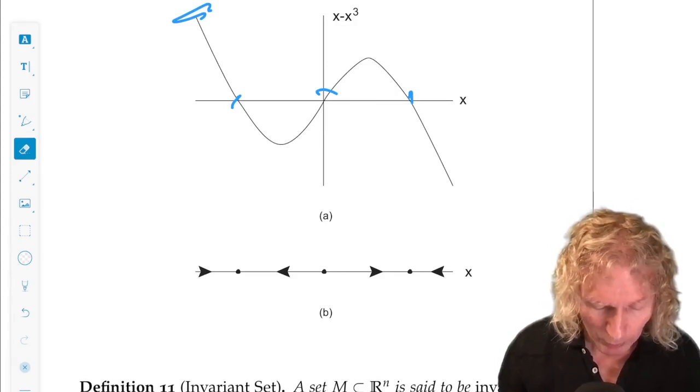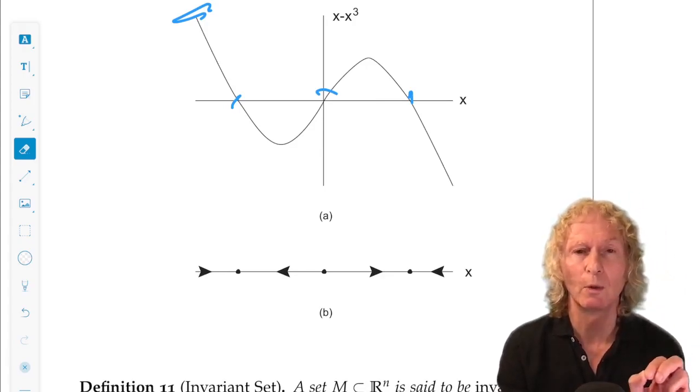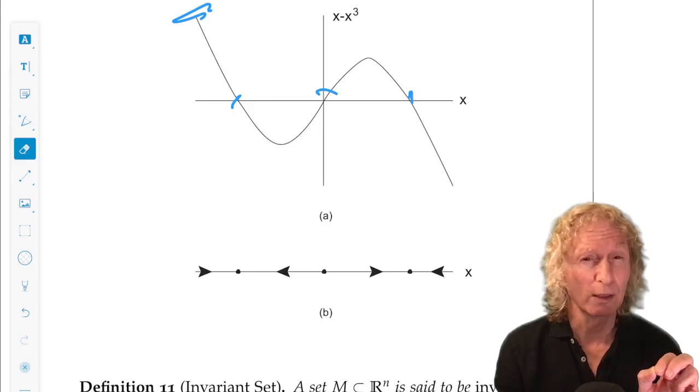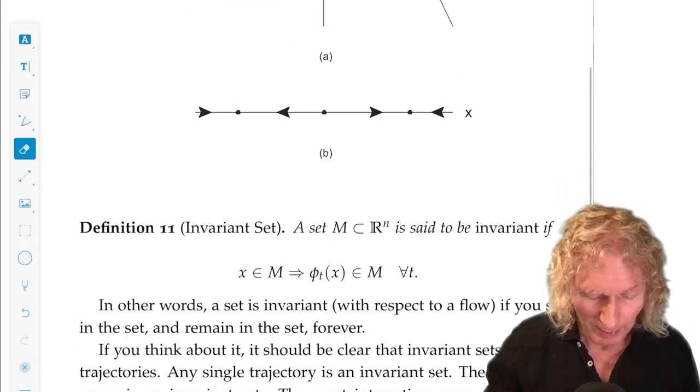It will approach the origin. And similarly for the heteroclinic connection between minus one and one. There aren't any homoclinic connections and there are not any periodic orbits. And we'll come back to that later.